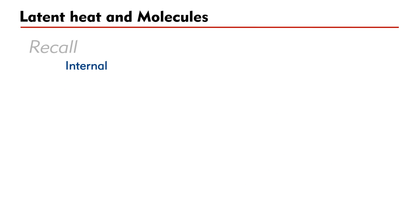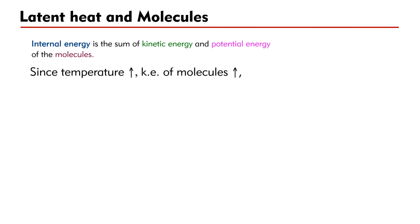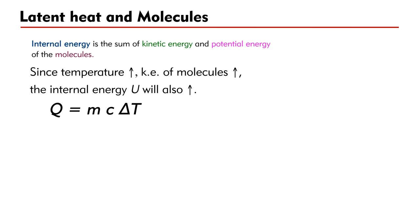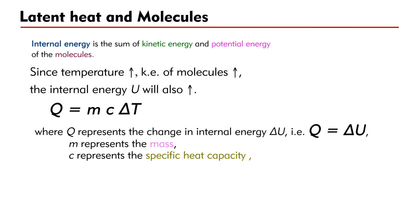Recall that internal energy is the sum of kinetic energy and potential energy of the molecules. Since an increase in temperature will increase the kinetic energy of the molecules, the internal energy U of the object will also increase. Mathematically, it is expressed as Q equals M times C times delta T, where Q represents the change in internal energy delta U, M represents the mass, C represents the specific heat capacity, and delta T represents the change in temperature.